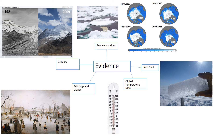The only problem with this type of evidence is that many of the thermometers might have been placed in cities, and since they were placed there perhaps a hundred years ago, those cities have got bigger. Cities tend to be a lot warmer than the surrounding countryside, so we do need to take that into account. This is known as the urban heat island effect.